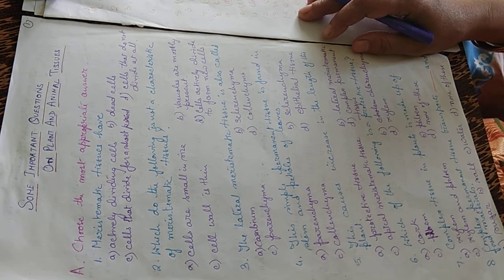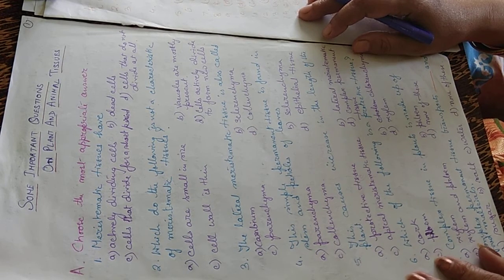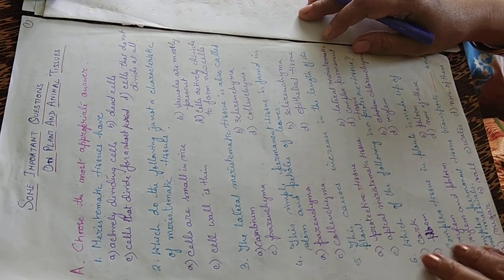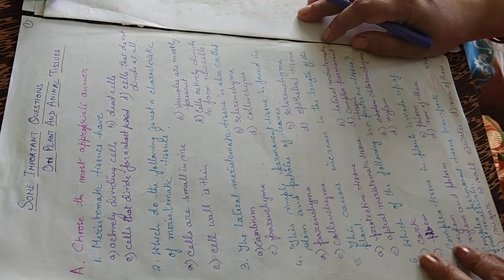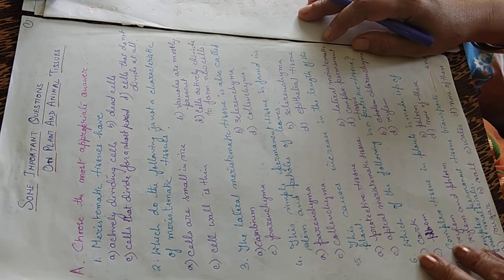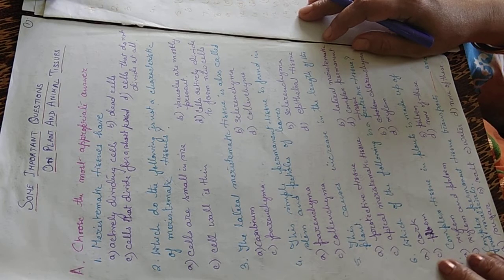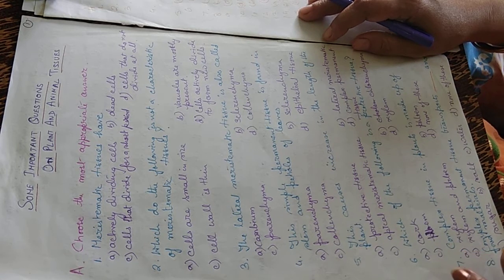Which of the following is not a characteristic of meristematic tissues? Options: cells are small in size, vacuoles are mostly present, cell wall is thin, or cells actively divide to form new cells. The answer is B — vacuoles are mostly absent.